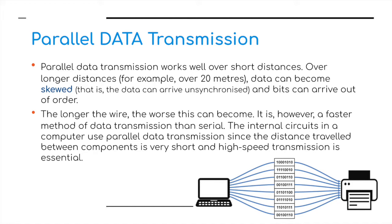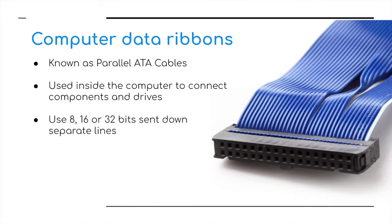Parallel is however a faster method of data transmission than serial. Therefore, the internal circuits in a computer use parallel data transmission, since the distance traveled between components is very short and high-speed transmission is essential. If you look inside an older desktop computer, you'll see wide ribbon cables — known as parallel ATX cables — used to connect components and drives, usually coming in strips of 8, 16, or 32 bits sent down each wire at the same time.